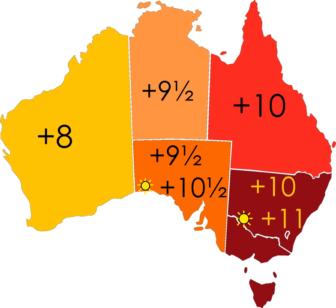The main DST zones are: Australian Central Daylight Saving Time (CDST or ACDT) UTC+10:30, in South Australia; and Australian Eastern Daylight Saving Time (EDST or AEDT) UTC+11, in New South Wales, the ACT, Victoria, and Tasmania. During the usual periods of DST, the three standard time zones in Australia become five zones, including areas that do not observe DST: Western Australia UTC+8, the Northern Territory UTC+9:30, and Queensland UTC+10.